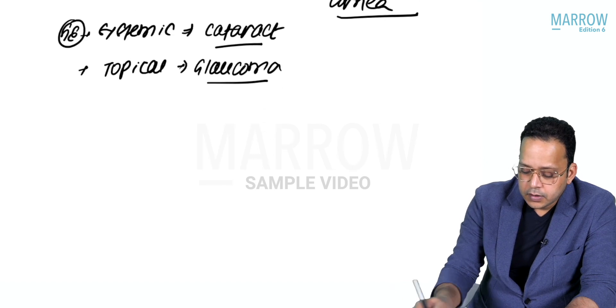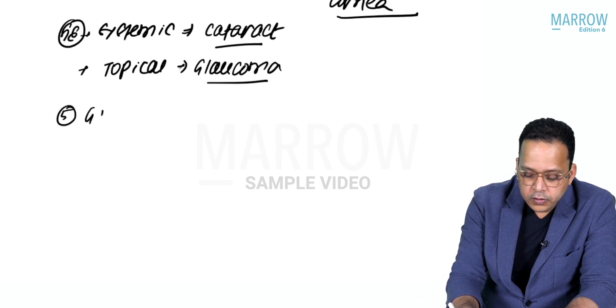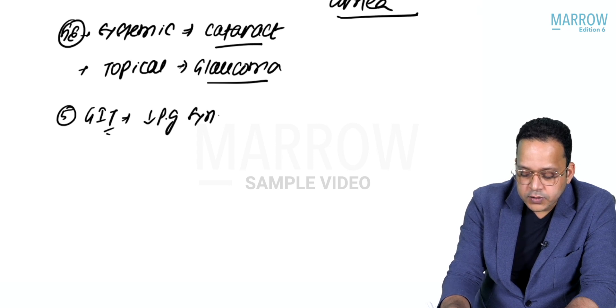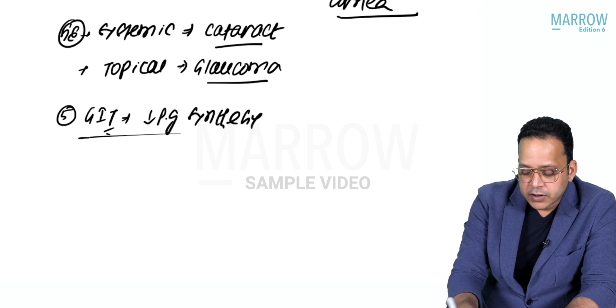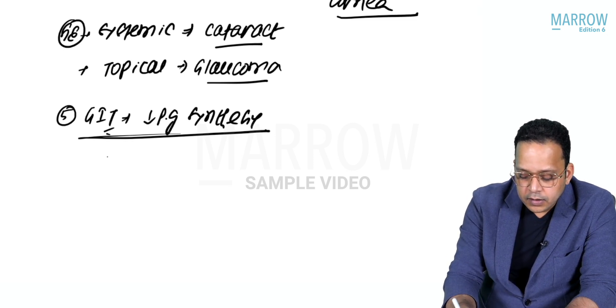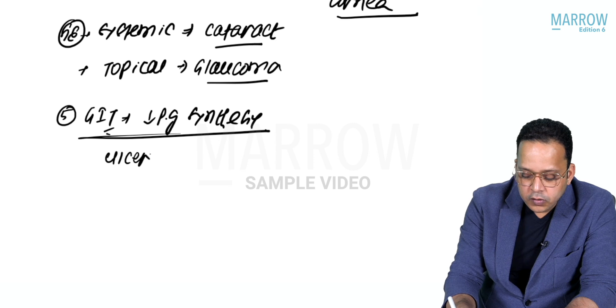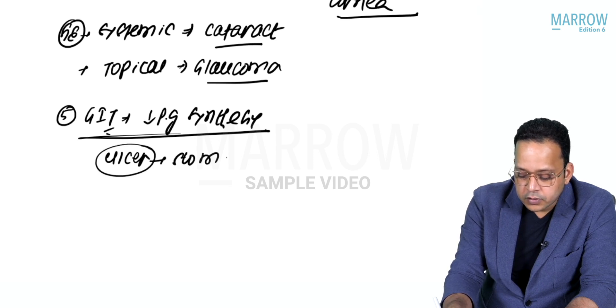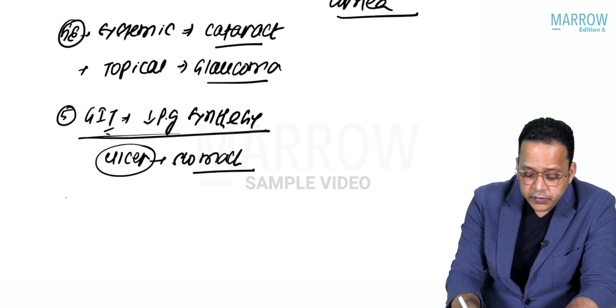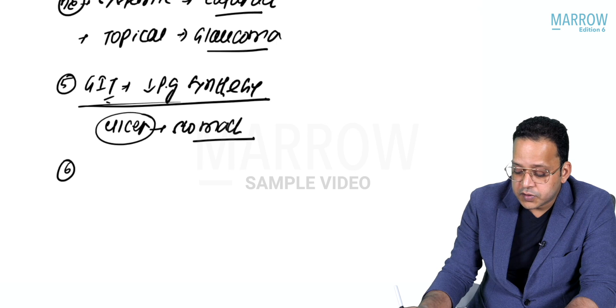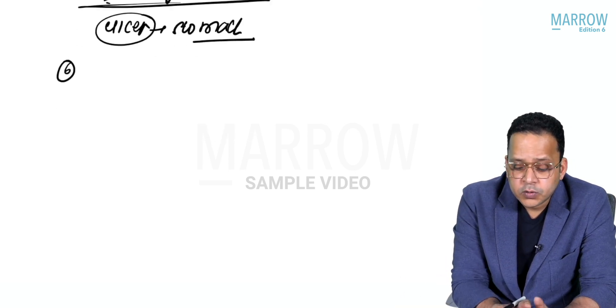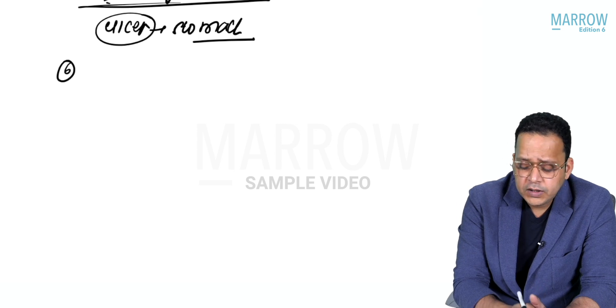Number five, what do they cause in GIT? Because of decreased prostaglandin synthesis, they'll remove the mucosal barrier of the stomach and can cause ulcer - gastric ulcer. This is one precaution we have to take while giving steroids: I must give PPIs as well to prevent this ulcer.